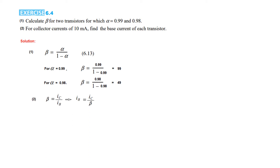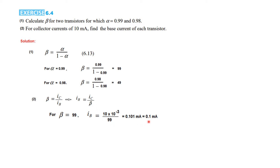For the second part, we write the equation IB equals IC over beta. IC is 10 milliampere, so we write 10 milliampere in this formula. With beta equal to 99, IB will be 0.1 milliampere.